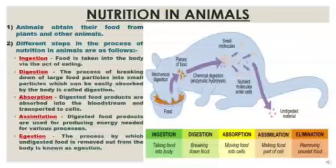The next process is digestion — the breaking down of large food particles into small particles which can be easily absorbed by the body. Absorption is when digested food products are absorbed into the bloodstream and transported to cells. Assimilation is when the absorbed food is utilized for the production of energy needed by animals for various processes. The last process is egestion, in which undigested or unwanted food is removed out from the body.